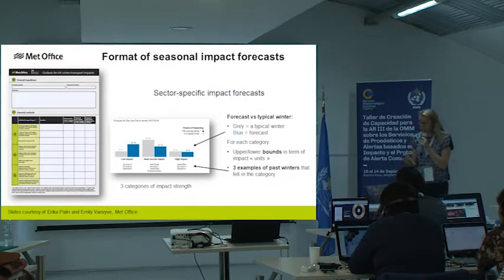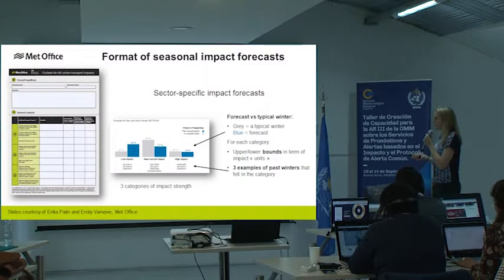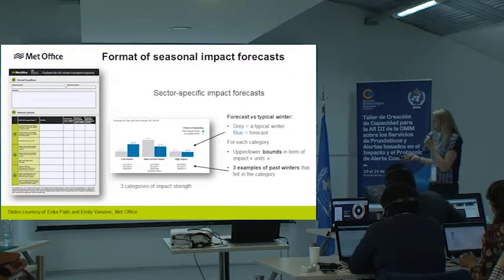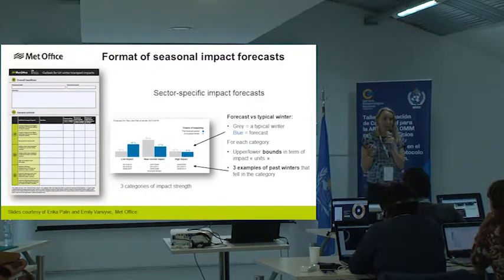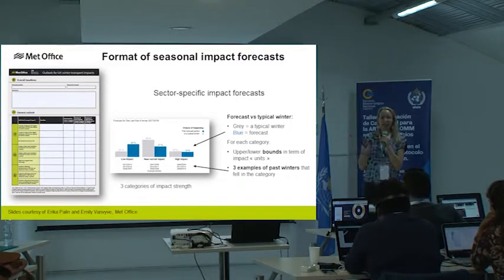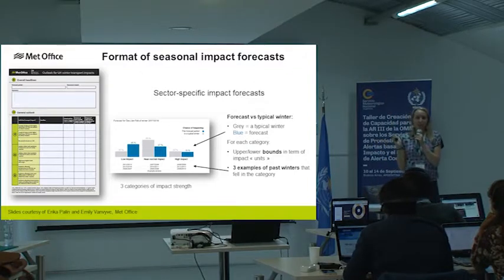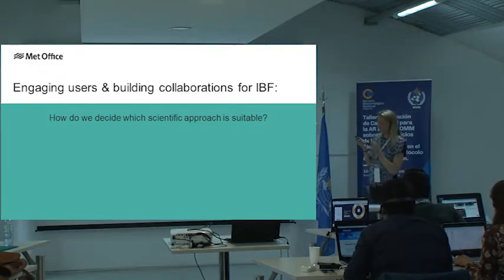Seasonal products compare typical winter impacts to what's forecast for the current winter, which then populates a seasonal outlook. The critical requirement here is having good impact data — and having a good relationship with those who hold it — to take these forecasts forward.